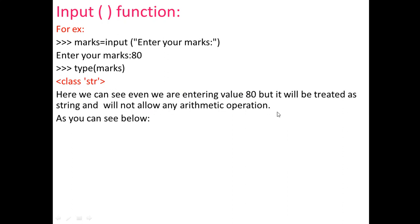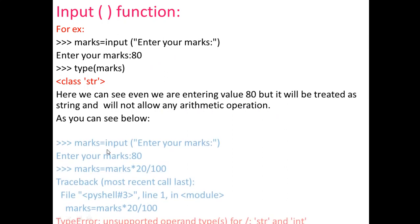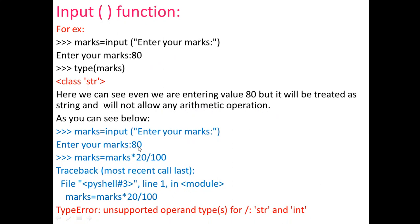This string value will not allow any arithmetic operations. For example, if marks = input('Enter your marks:') and we enter 80, then writing marks = marks * 20 / 100 to calculate 20 percent of marks will produce a TypeError: unsupported operand type for str. This error occurs because the input function receives data as a string and you cannot perform arithmetic operations on it directly.